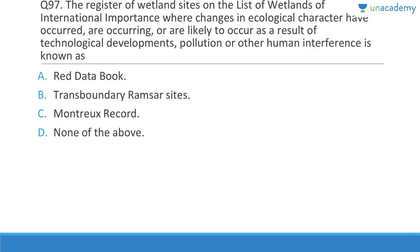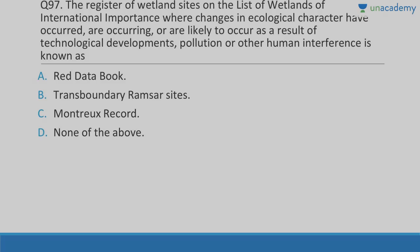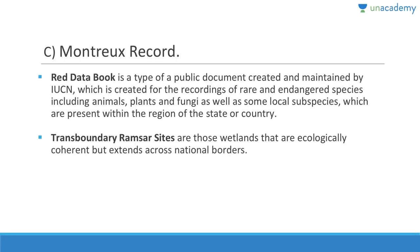Question 97: The register of wetland sites where ecological character has changed, is changing, or may change due to technological developments, pollution, or human interference is called the Montreux Record. The Red Data Book is a public document maintained by the IUCN for threatened and endangered species. Transboundary Ramsar sites are ecologically coherent wetlands extending across national boundaries, for example between India-Pakistan, India-Nepal, or US-Canada.